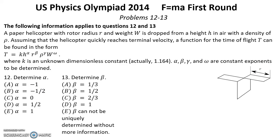Problems 12 and 13. The following information applies to questions 12 and 13. A paper helicopter with rotor radius r and weight w is dropped from height h in air with density of rho. Assuming that the helicopter quickly reaches terminal velocity, the function for the time of flight t can be found in the form t equals this expression, where k is an unknown dimensionless constant.